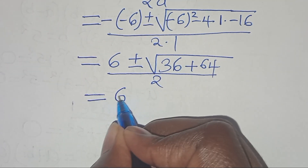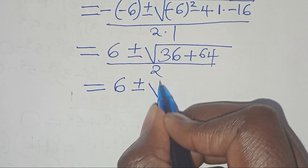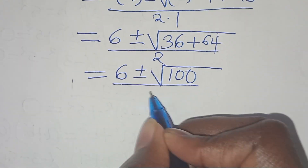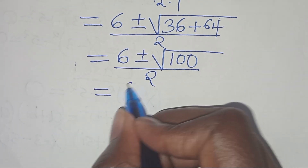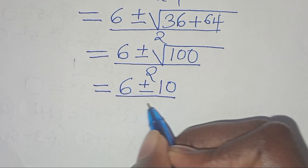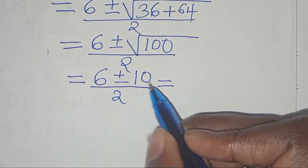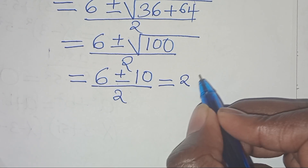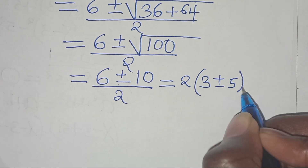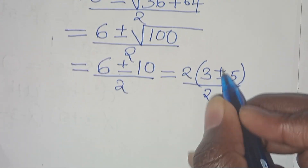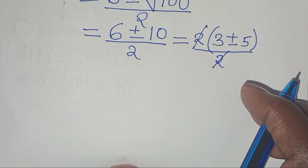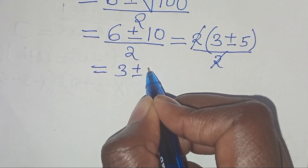Simplifying: 6 plus or minus the square root of 36 plus 64, which is 100, divided by 2. So we have 6 plus or minus the square root of 100, which is 10, divided by 2. Factoring out 2, we get 2 times the quantity 3 plus or minus 5, divided by 2, giving 3 plus or minus 5.